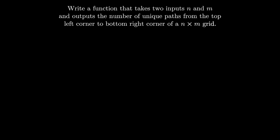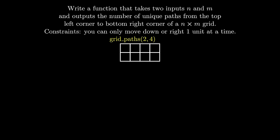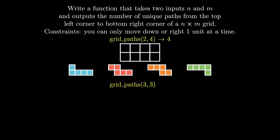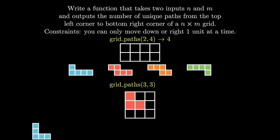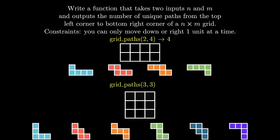Let's now explore a more involved recursive problem. Write a function that takes two inputs n and m and outputs the number of unique paths from the top left corner to the bottom right corner of an n by m grid. One key constraint is that you can only move down or right one unit at a time. Before we apply our five steps, let's first familiarize ourselves with a few inputs and outputs for this function. Here's what happens when n equals 2 and m equals 4 — we end up with exactly 4 paths. And here's another example with n equals 3 and m equals 3 — we end up with 6 unique paths.